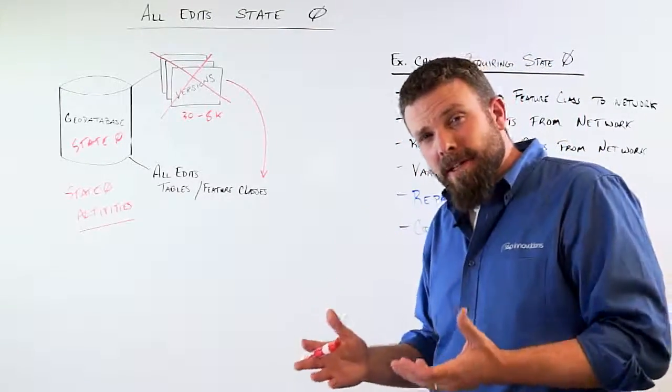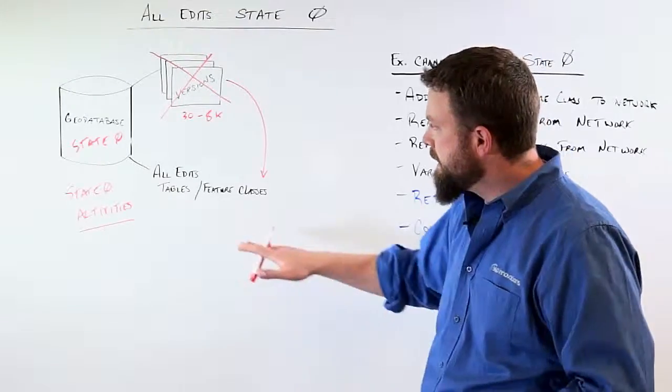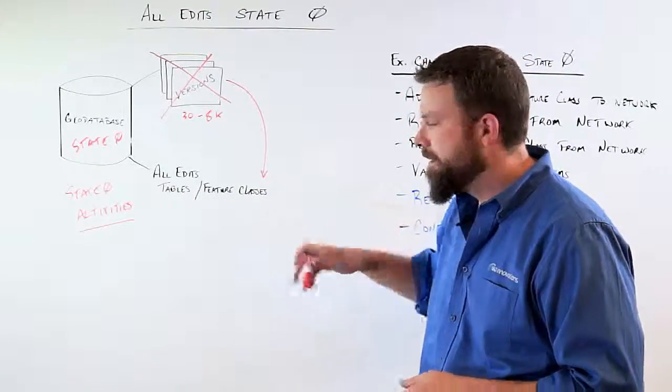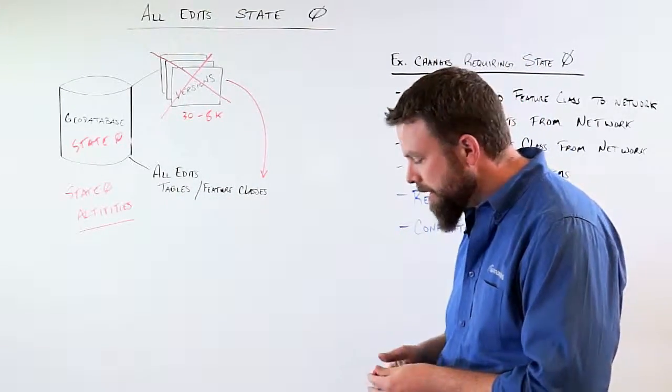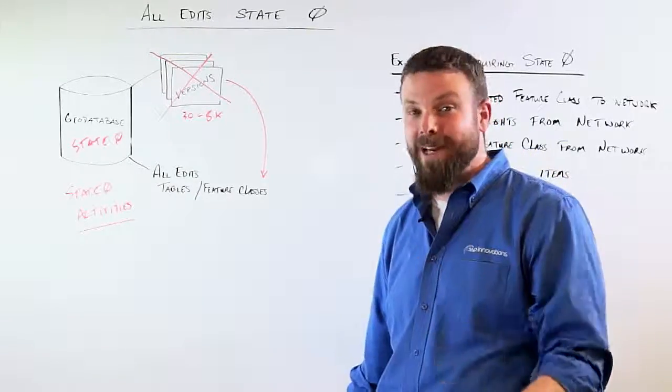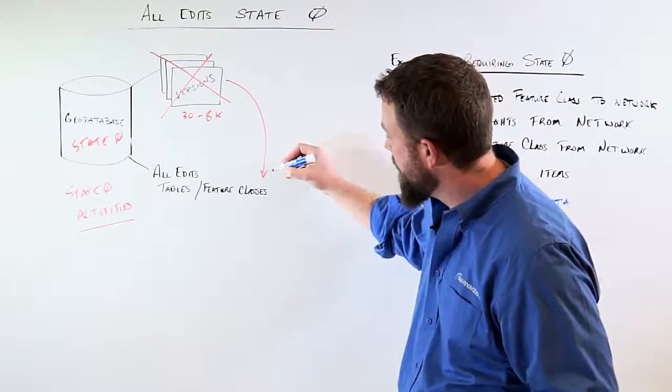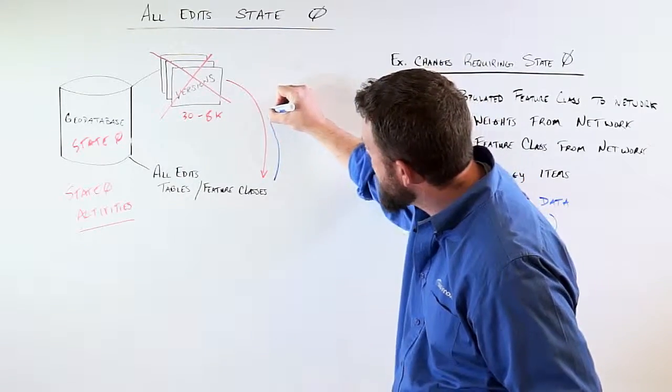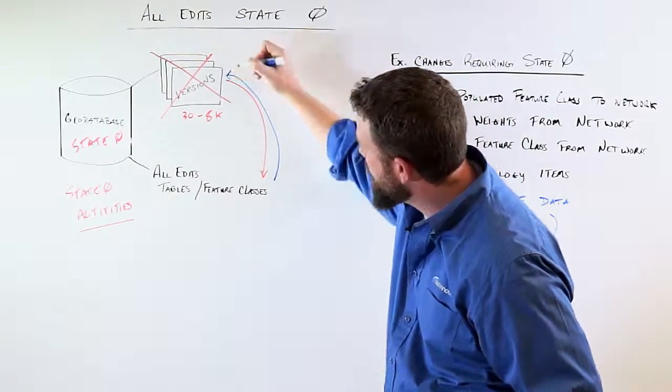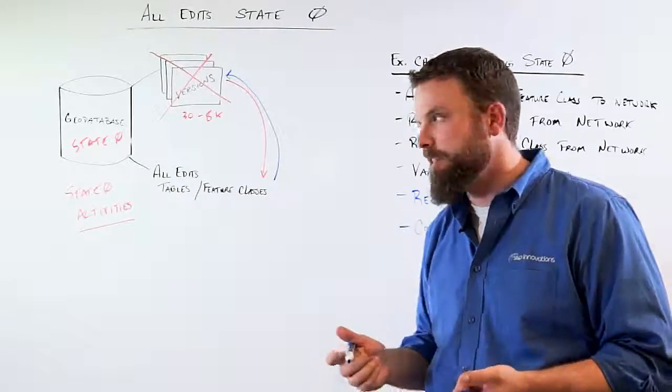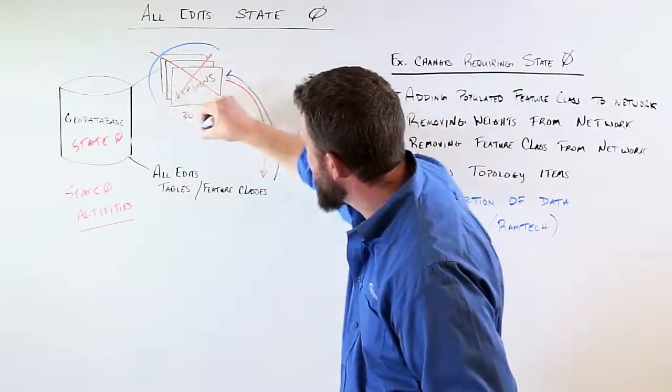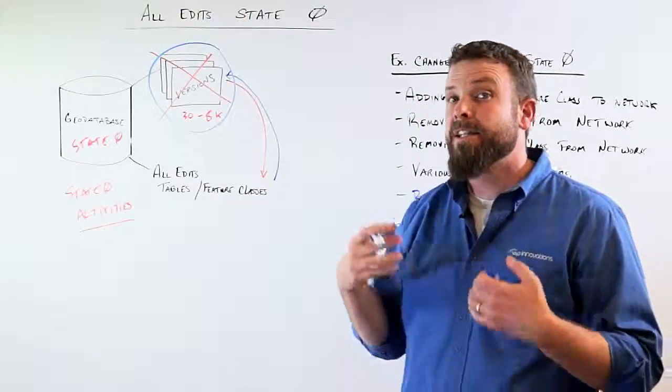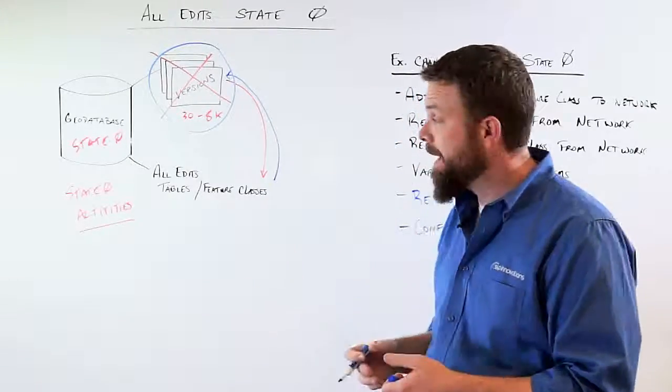The next piece of the all edit state zero is to take the data back from the all edits tables and feature classes and to take that data and to recreate the versions as they existed before. So we have a second process that extracts data out of those versions and replays right back into the versions as they existed before, thus recreating those versions. The same name, handle that via the backend.